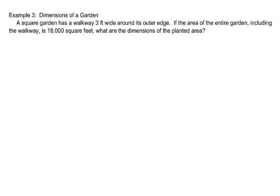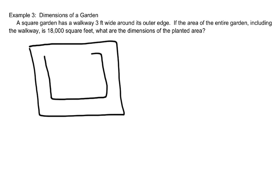So let's talk about an area problem using the dimensions of a garden. A square garden has a walkway 3 feet wide around its outer edge. If the area of the entire garden, including the walkway, is 18,000 square feet, what are the dimensions of the planted area? What does this picture look like? You've got to draw a picture. So it's a square, and inside that square is the planted area. This is where all my little flowers are. Walkway.